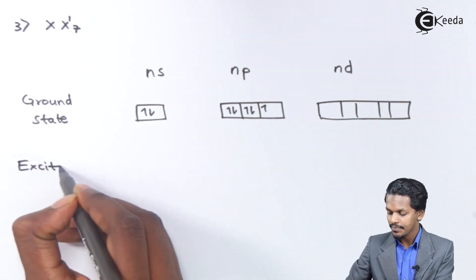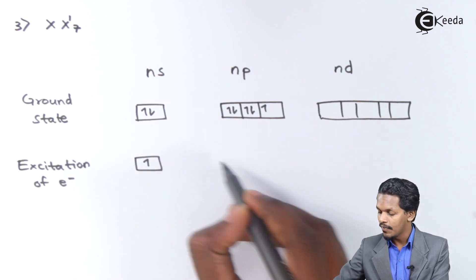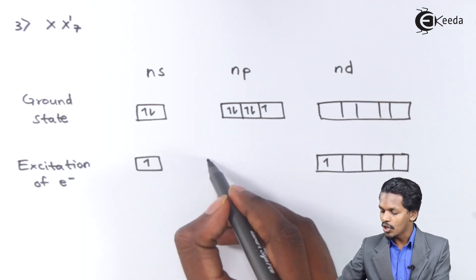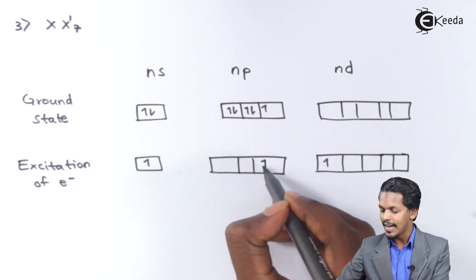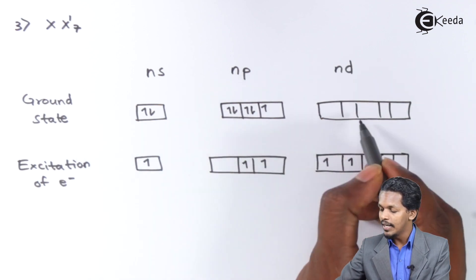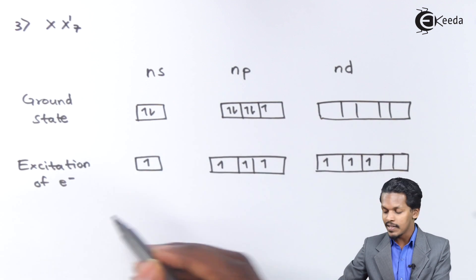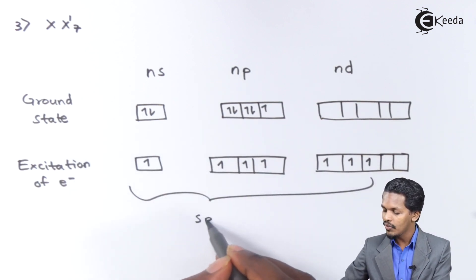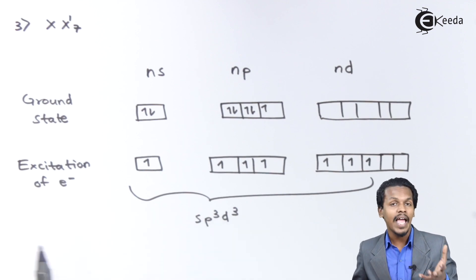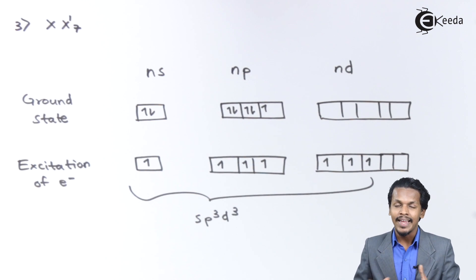After excitation of the central atom X, the paired electrons become unpaired as each shifts to a d orbital. All the orbitals undergo hybridization, giving sp³d³ hybridization. This produces a particular structure known as pentagonal bipyramidal.